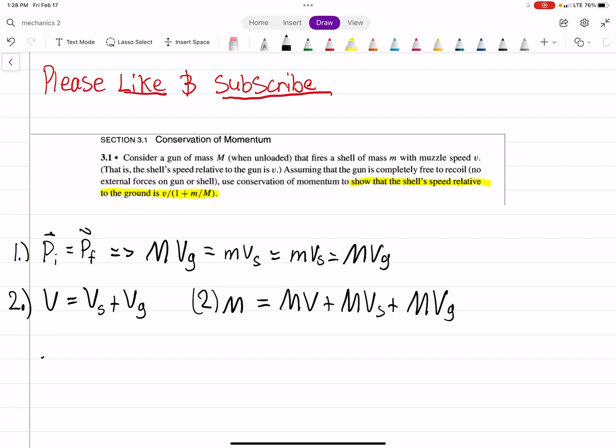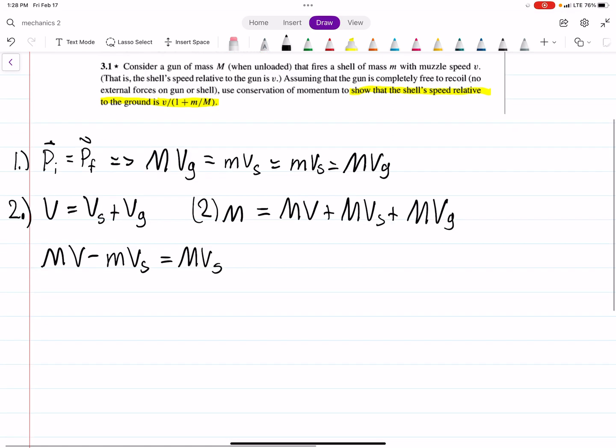What we're left with is mV minus mvs equals Mvs. We want to solve for vs, so that's easy. We have mV = vs(m + M).